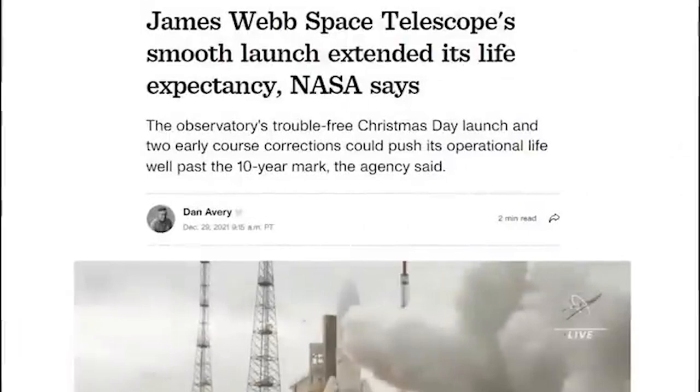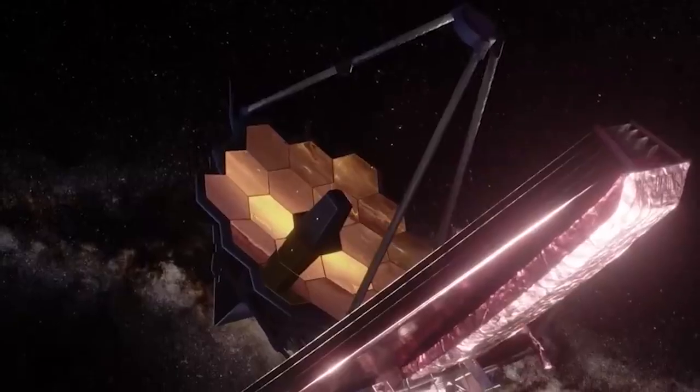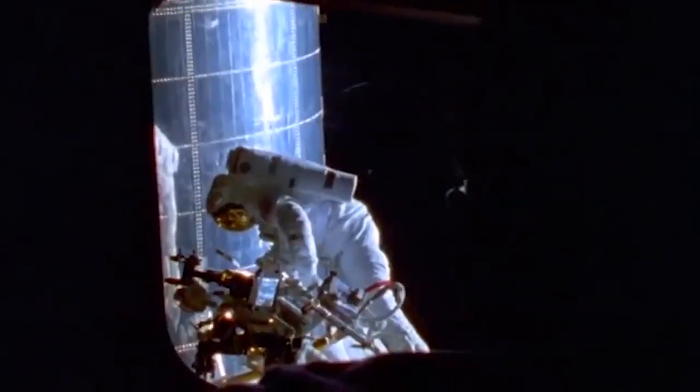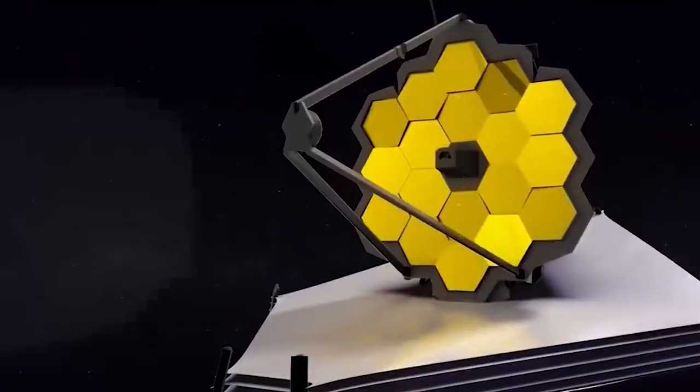NASA engineers and scientists have been hard at work setting it up since it arrived. For months, several telescope pieces have to be set up and calibrated, and all of them must be tested as they go. Taking pictures is a part of the exams. In February, the JWST captured its first image, an 18-star mosaic.